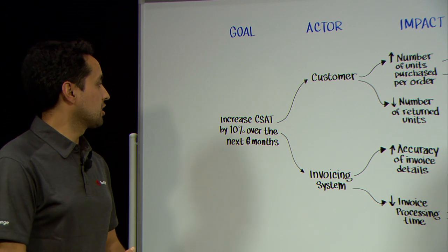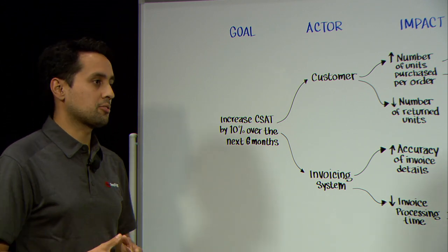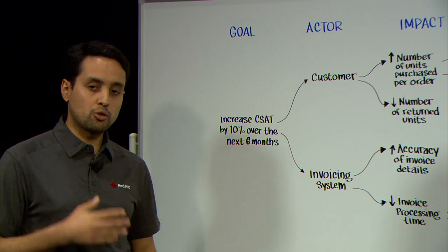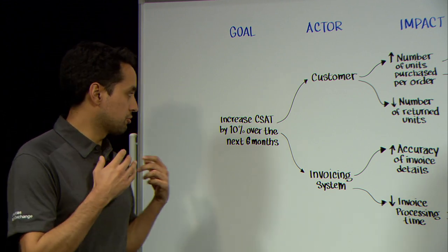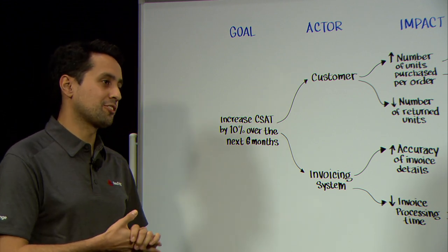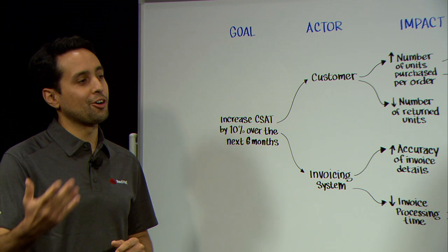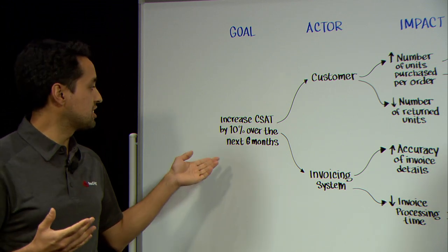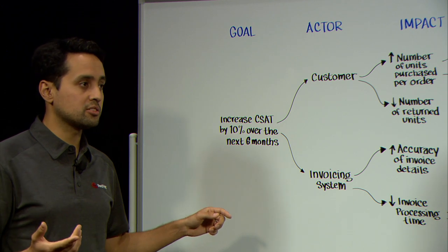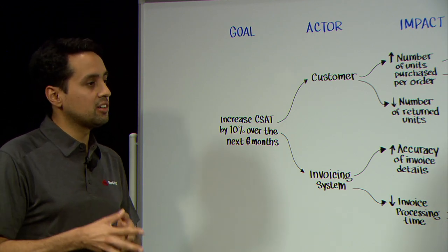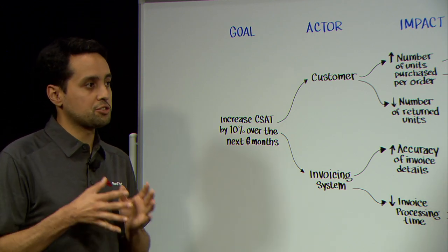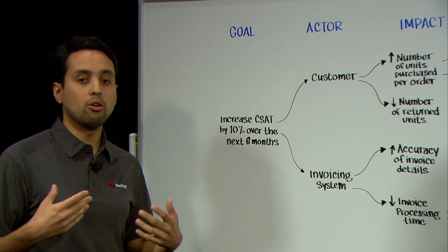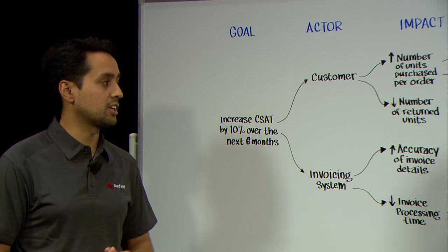For that, it sounds like we should start with a really important thing — that is our goal. So for this example, we have a real clear goal, and it should always be like that. We're talking about increasing our CSAT by 10% over six months. So that level of definition, you need to be on the goal. And more importantly, it should be agreed upon by all the people in your organization.